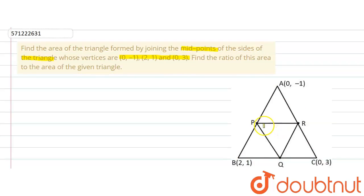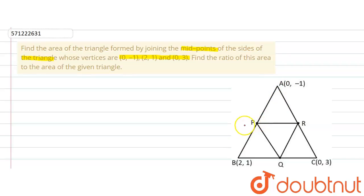We are supposed to find out the ratio of area of triangle PQR to the area of the whole triangle ABC. First of all, let us find out the coordinates of P, Q and R. We know that P is the midpoint of line AB. So by using the midpoint formula, we can write the coordinates of P: X1 = 0 plus X2 = 2, divided by 2, gives us 1.